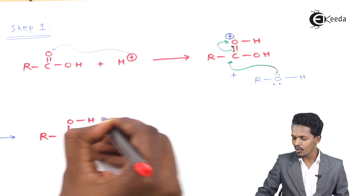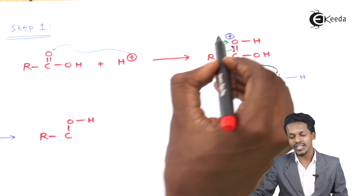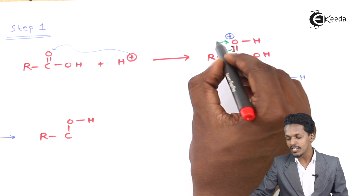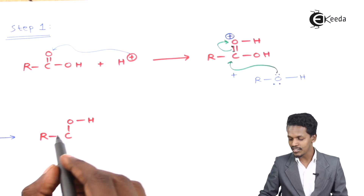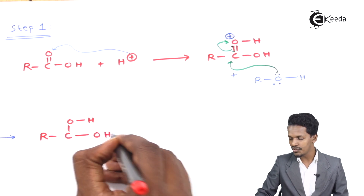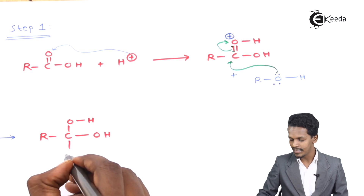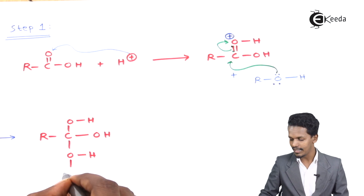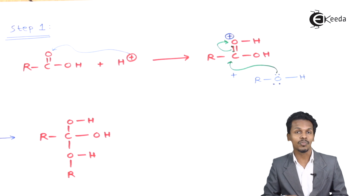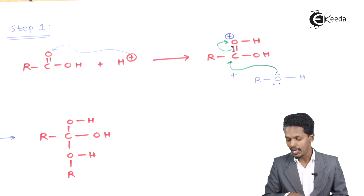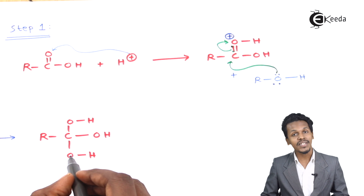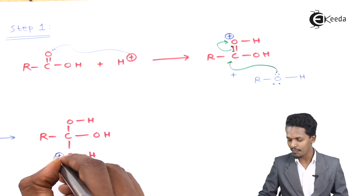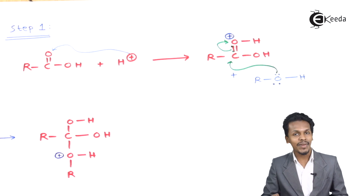The product obtained has the carbon attached to two OH groups and one OR' group. The positive charge is neutralized as the double-bond electrons shift to the oxygen. However, the newly attached oxygen from R'OH now has three valencies, giving it a positive charge.